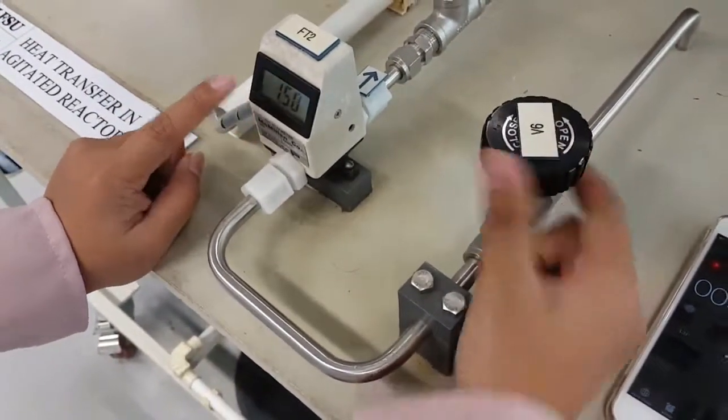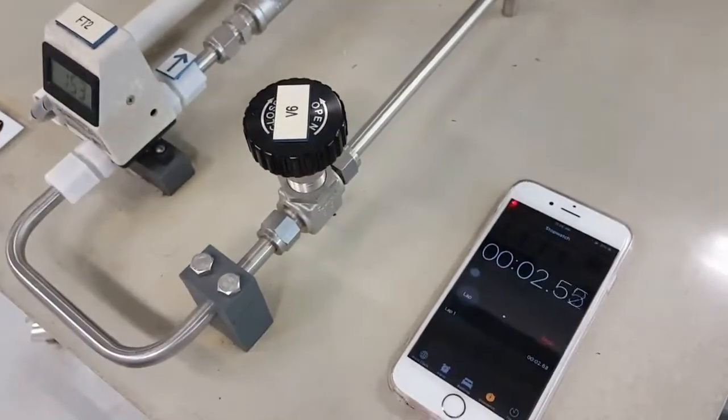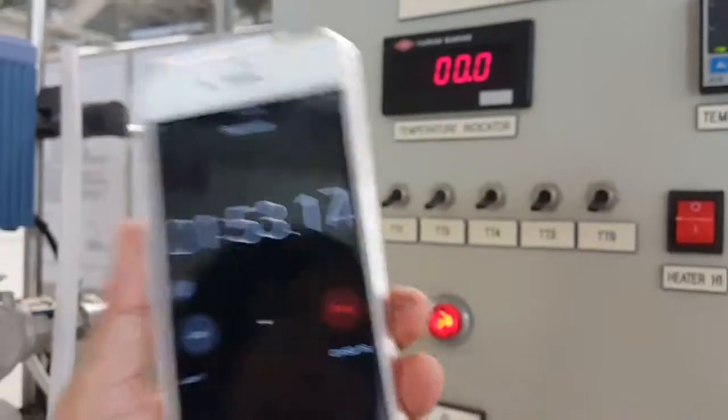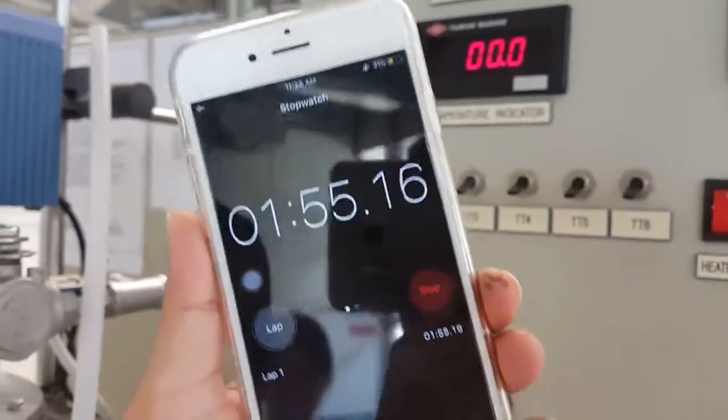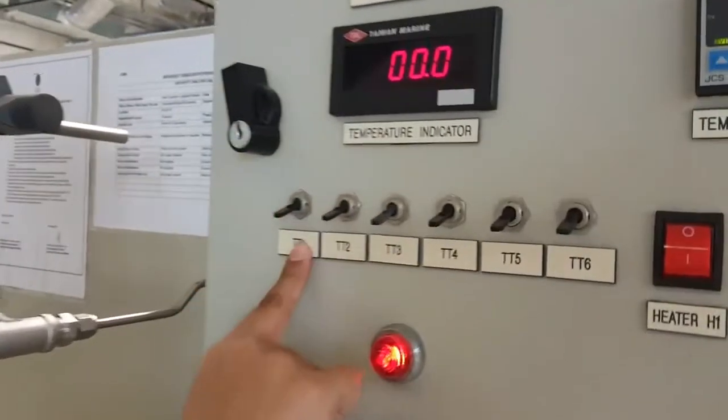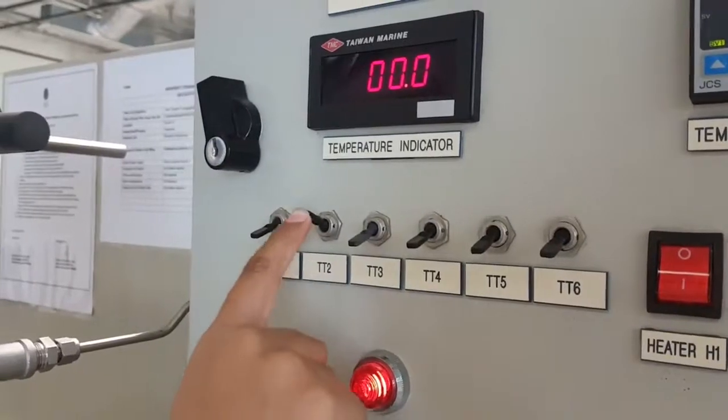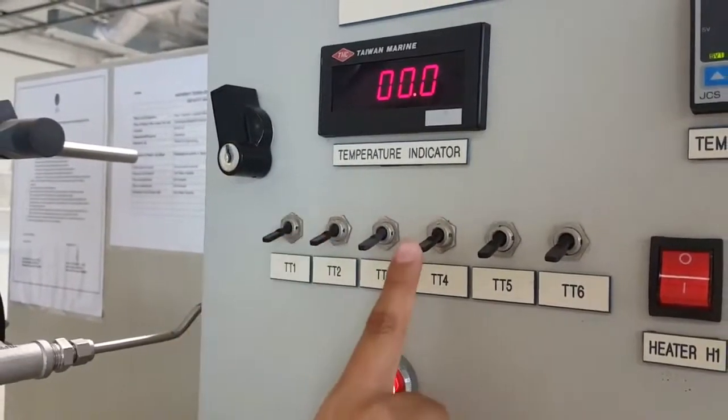Once we reach 1.5, we will start our stopwatch. Now, it is nearing 2 minutes, our first 2 minutes interval. So, we will check the TT1, TT2, and TT4.